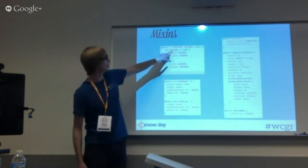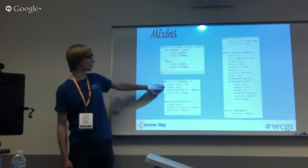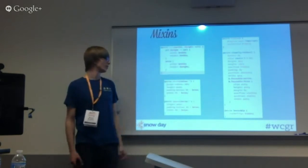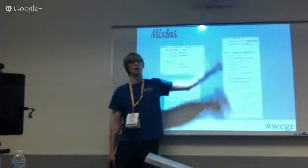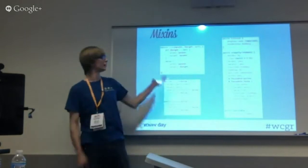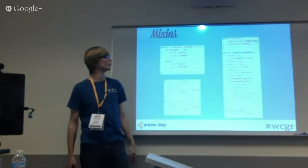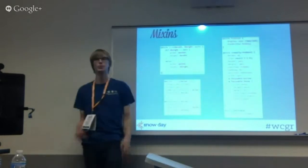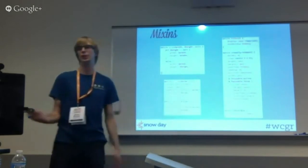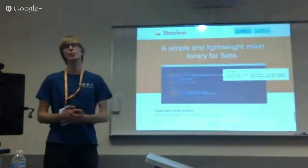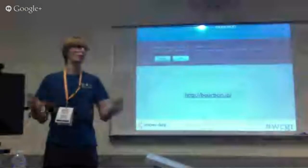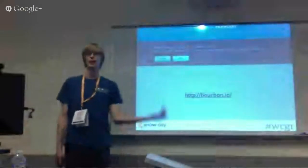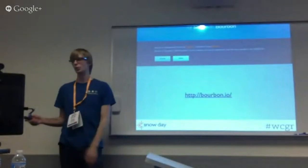You can do utility mixins — things like 'hidden' that just include display none. I use those all the time. There are tons of mixin libraries out there. One of them is Bourbon. Bourbon is very similar to Compass — it does all these CSS things, a lot of vendor prefix things. Check out bourbon.io. Compass does all of that too. You just call them really simply — like @include linear-gradient and it generates the full vendor-prefixed output.